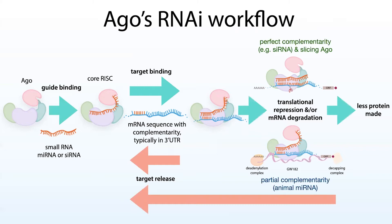The core RISC complex — Ago plus guide — is incredibly stable. It has a half-life of weeks, so the target can get released without interrupting this core RISC. The RISC complex is then capable of seeking out additional targets to repress. This gives a single RISC protein a lot of power to target messenger RNAs that contain complementarity to that small RNA.